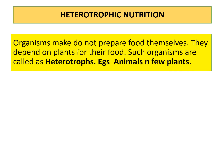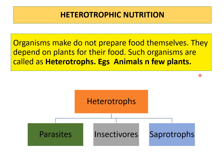What is heterotrophic nutrition? Organisms which do not prepare their food themselves but depend on other plants or organisms for their food are called heterotrophs — for example, animals and a few plants. There are certain plants which show heterotrophic mode of nutrition.